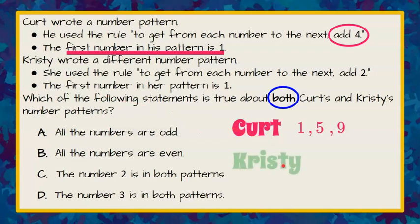Now let's look at Christy's pattern. Christy's first number in her pattern is also one. So we'll start her number pattern with one. Her rule to get from each number to the next was add two. So one plus two is three. Three plus two is five. And let's stop there too.